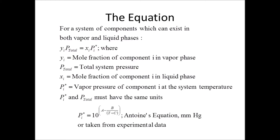We can find the vapor pressure p-star_i from various sources. One is Antoine's equation, where coefficients A, B, and C are tabulated for each individual compound, and T is the system temperature. In our textbook, T is in degrees Celsius and pressure is in millimeters of mercury. We can also use p-star_i from experimental data, which would give a better fit for our equations.